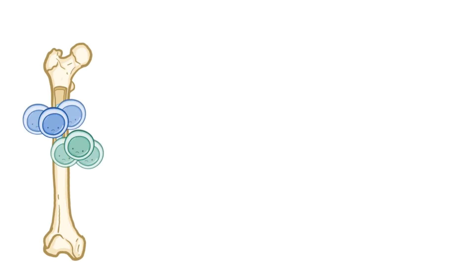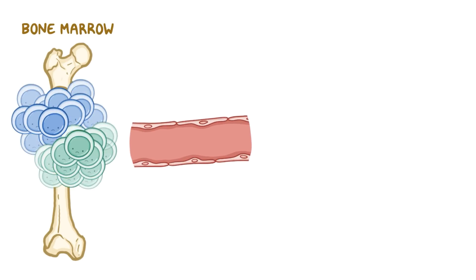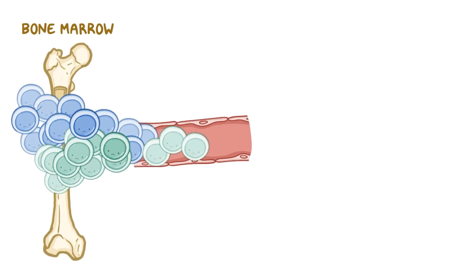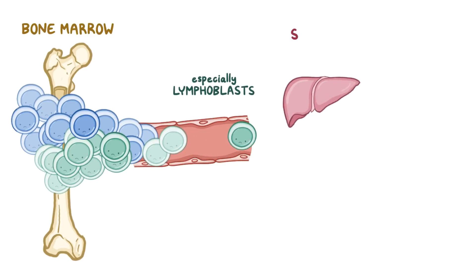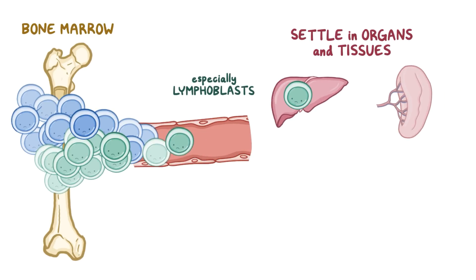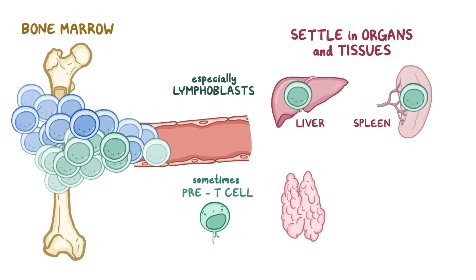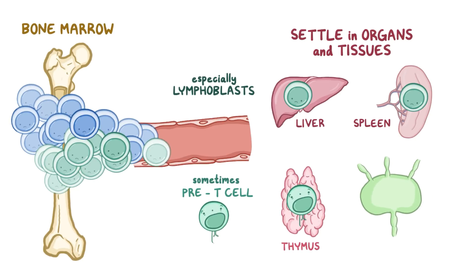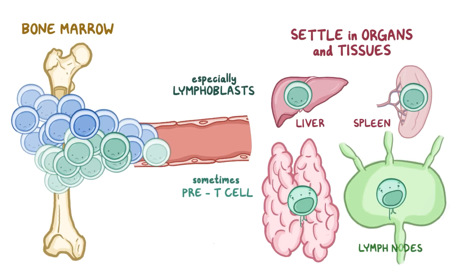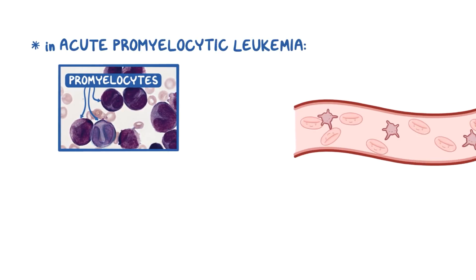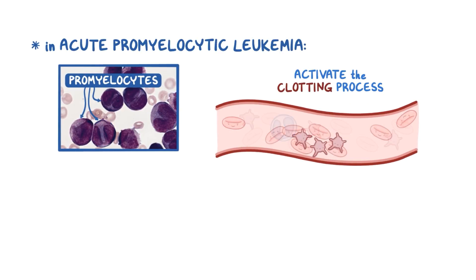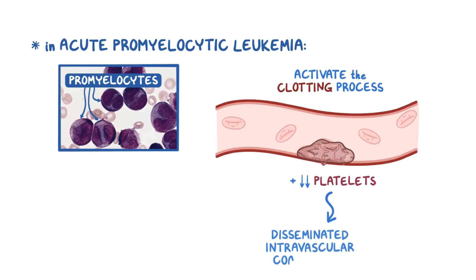As the number of blast cells in the bone marrow keeps increasing, they spill out into the blood. Some of these, especially lymphoblasts, settle down in organs and tissues across the body, like the liver and spleen. Sometimes pre-T cells in T cell ALL migrate to the thymus or lymph nodes like normal T cells do, and settle down there, causing these structures to enlarge. Also, in acute promyelocytic leukemia, the promyelocytes activate the clotting process, and this, combined with the already decreased platelets, results in disseminated intravascular coagulation.